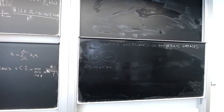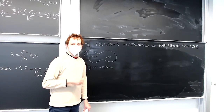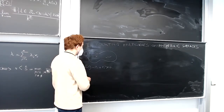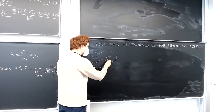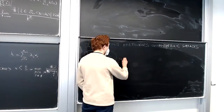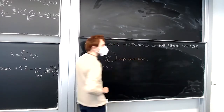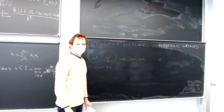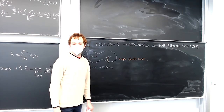By simple closed curve I mean the proper isotopy class of the proper embedding of the circle inside the surface, and I don't want them to be homotopic to the boundary. This is a simple closed curve. A multi-curve is just the disjoint union of simple closed curves, which have representatives that pairwise don't intersect.